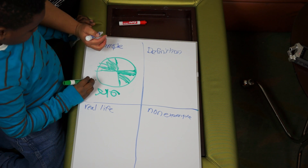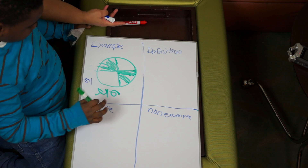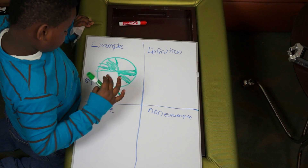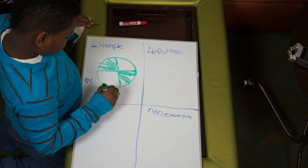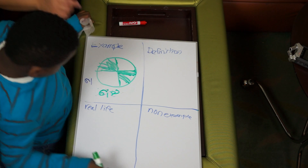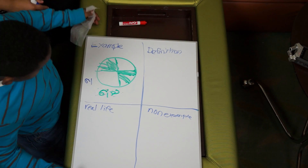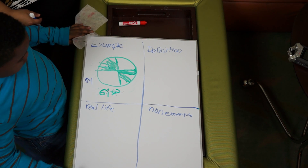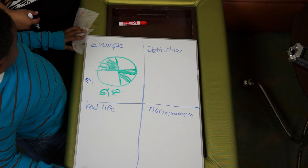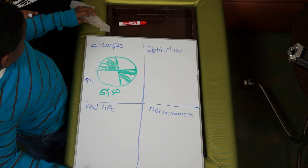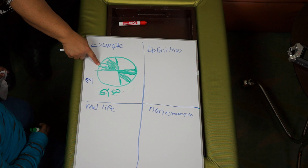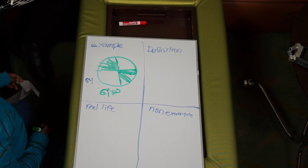The top number tells us how many pieces were eaten or left, depending on the question. So if two people ate two pieces each and I asked how many were left, what fraction would you write? Two and six. So we would say that as two-sixths.